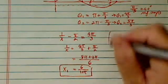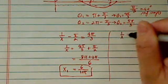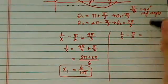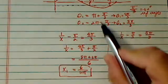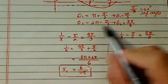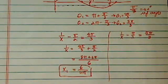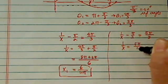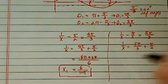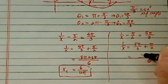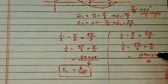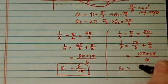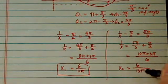Now let's find x2. We have 1 over x minus pi over 2 equal to theta 2, which is 5 pi over 3. Let's verify: 6 minus 1 is 5. So 1 over x equals 5 pi over 3 plus pi over 2, which with a denominator of 6 gives 10 pi plus 3 pi. So x2 equals 6 over 13 pi.